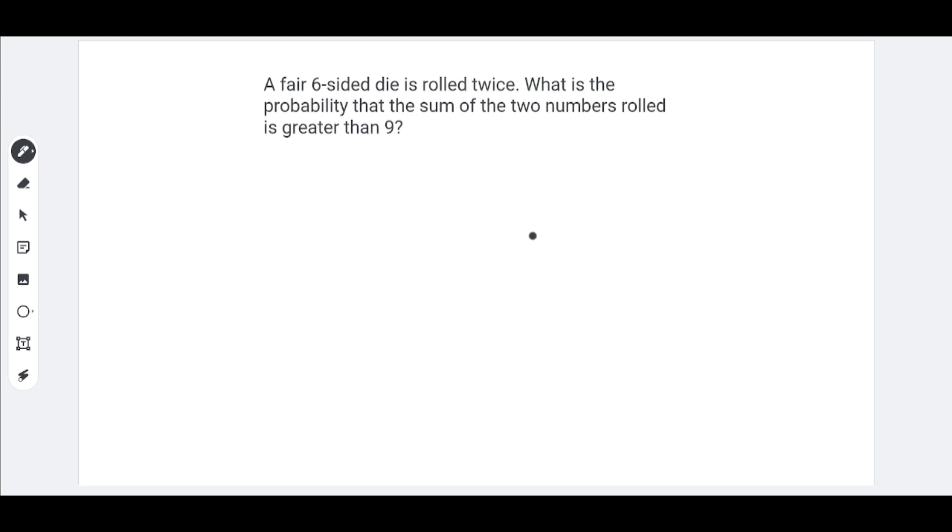A fair six-sided die is rolled twice. What is the probability that the sum of the two numbers rolled is greater than nine? Take your time to solve this, and then I will release the answer.